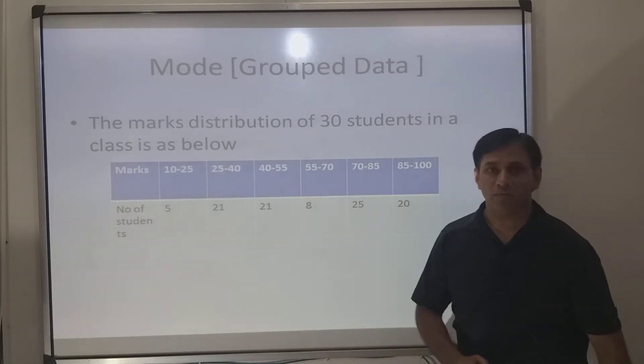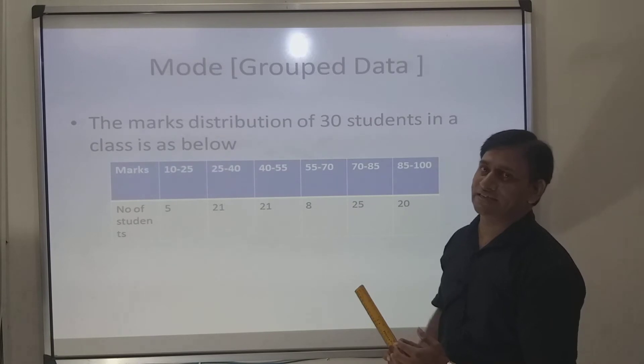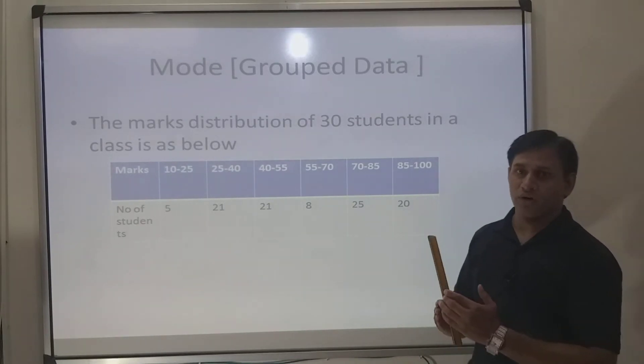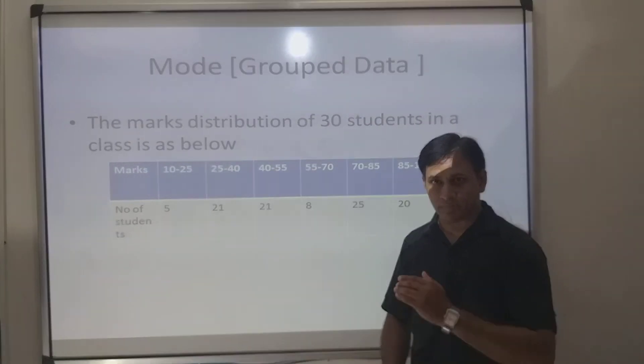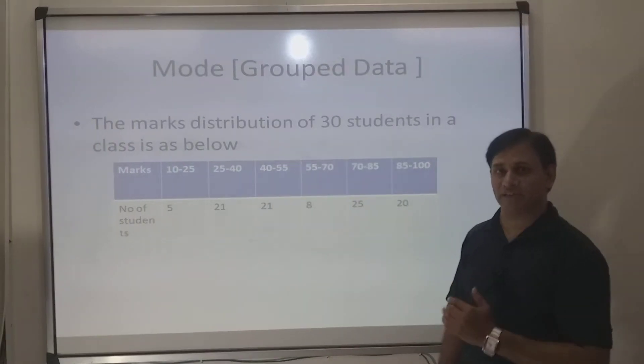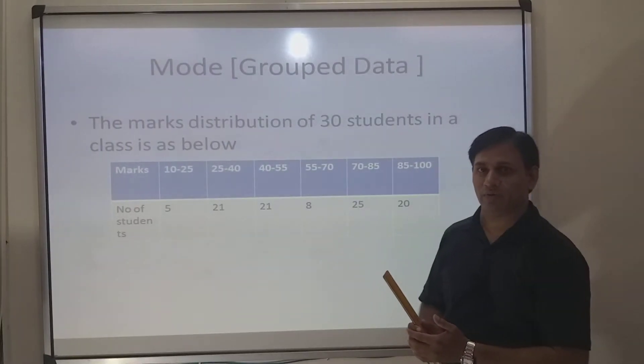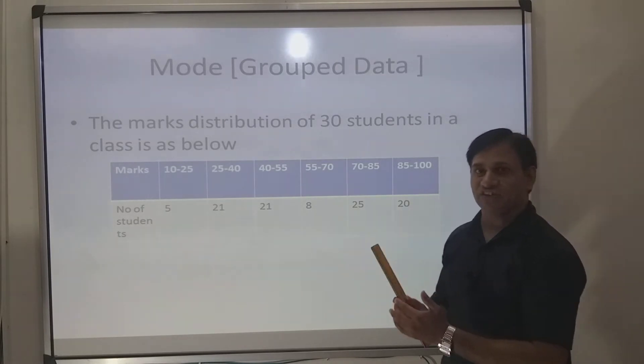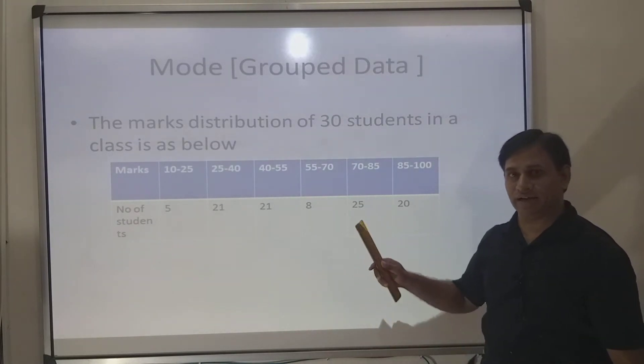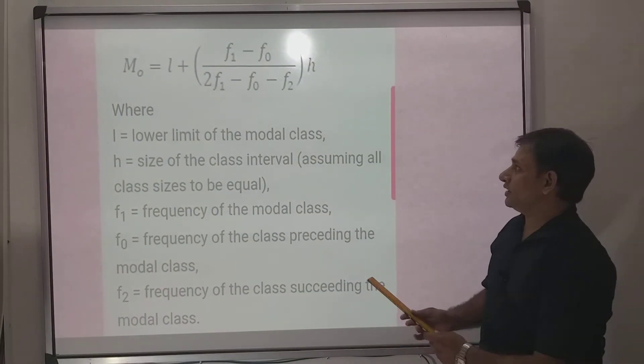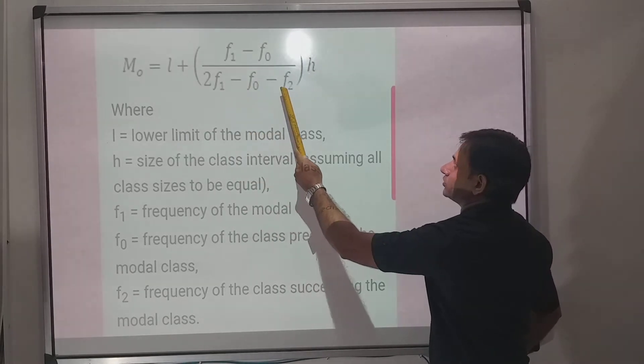We will first generate the formula for mode. Formula is very easy. Let me repeat the formula. Mode, which will be denoted as Z, Z is equal to l plus bracket f1 minus f0 upon 2f1 minus f0 minus f2 bracket closed into h. Let us see the formula and I will elaborate it.